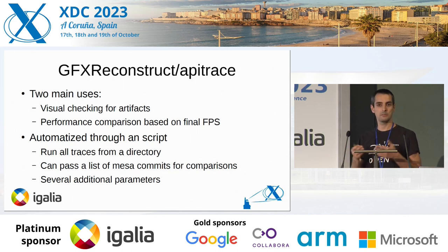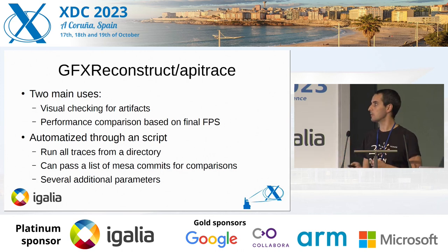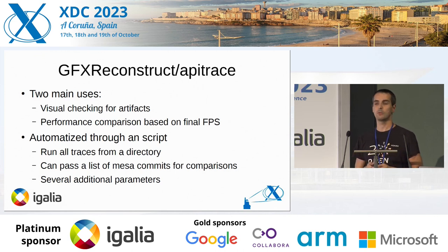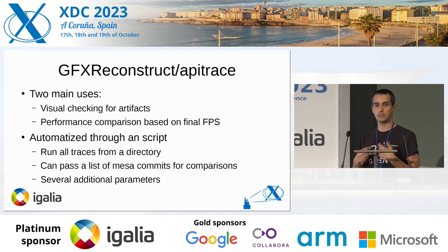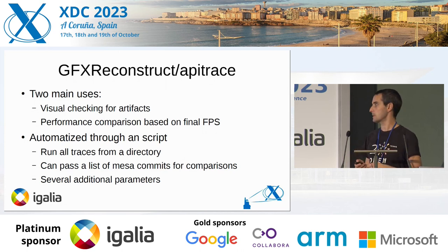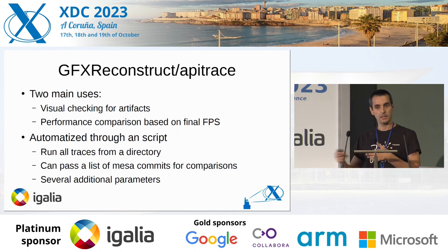Having the traces allowed us to just put the trace to run and look for the artifact. We also used that for performance comparison between before and after an improvement, using FPS. We created an automation script for that — we had all the traces in one directory, the script took all the traces from that directory. Over time we started to add some parameters, for example to average: we ran the traces several times and got an average of the frames per second.